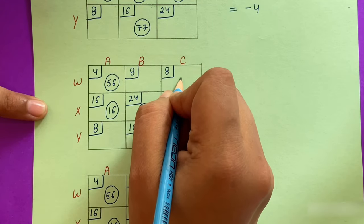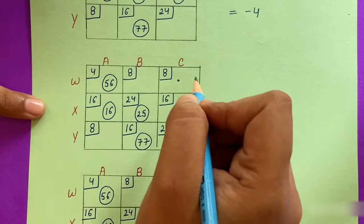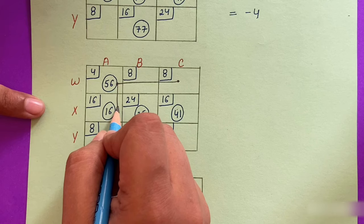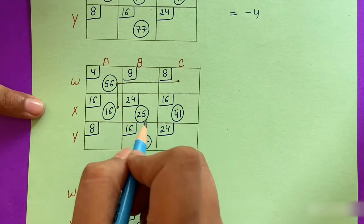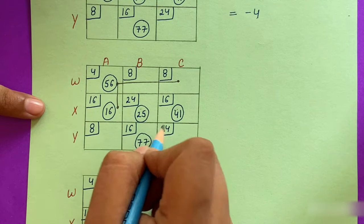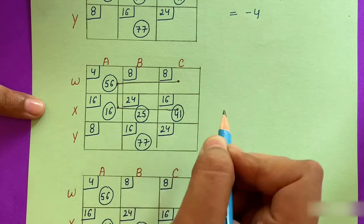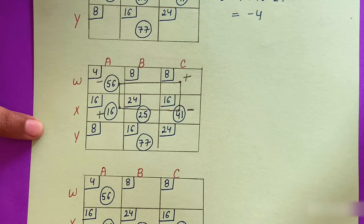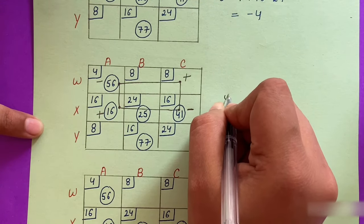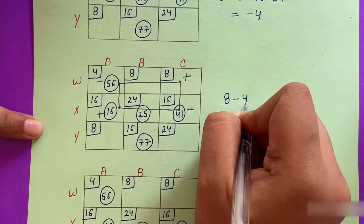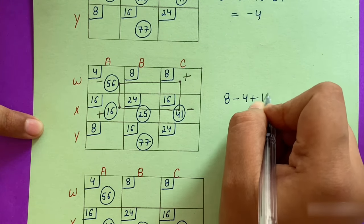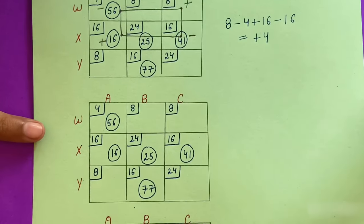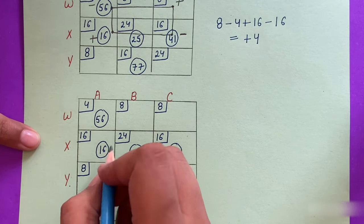For the WC cell, we trace the loop. Note we can skip over a stone or water square and move directly. Assigning signs: improvement index = 8 − 4 + 16 − 16 = +4.